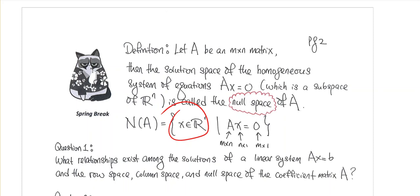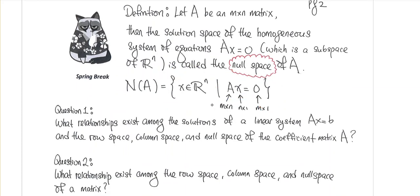...these are the collections of vectors which are the solutions to the homogeneous system. For the null space of A, you're looking at all the vectors x such that Ax equals zero. So these are the row space, column space, and null space.